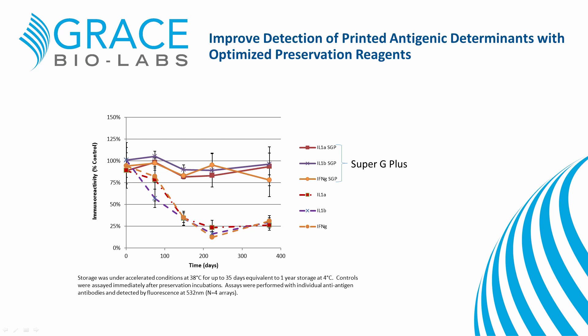What happens after spotting is just as important as the parameters during spotting. This is a critical stage in the life of a microarray where proteins are subjected to an unnatural dry state and then expected to rehydrate and perform optimally. This is an example where we monitored spotted cytokine antigenicity over time with and without a protein preservation reagent. Without effective preservation, 75% of the spotted cytokines lost antigenicity in less than 200 days. With our preservation buffer, we retain 100% antigenicity over the course of a year.